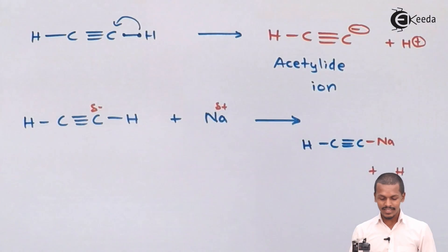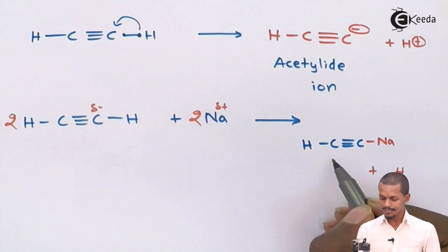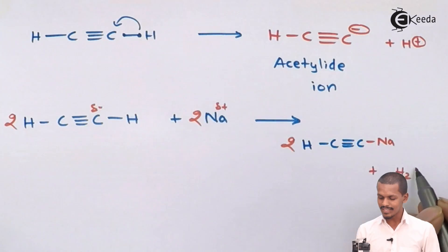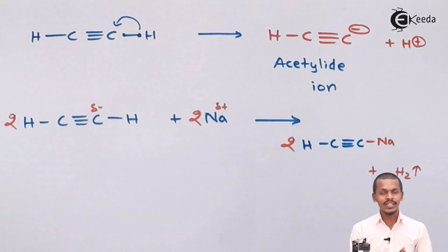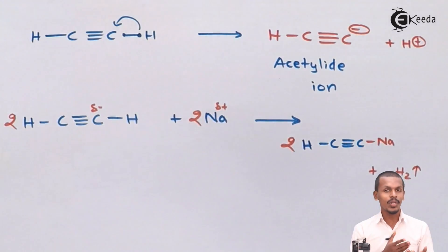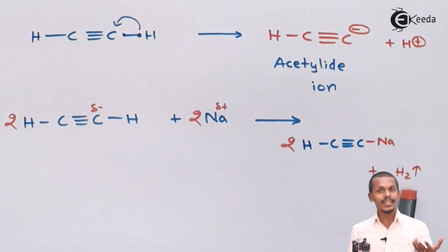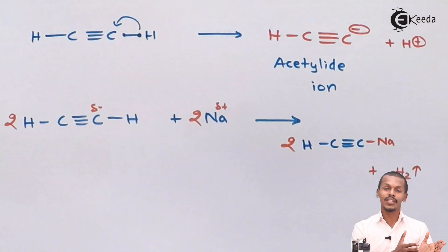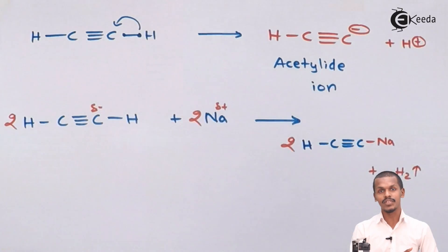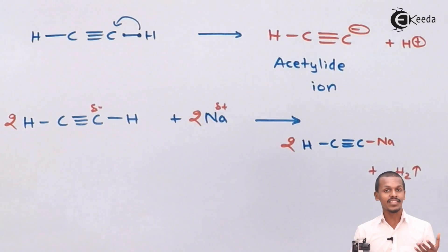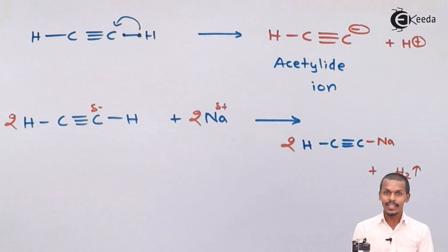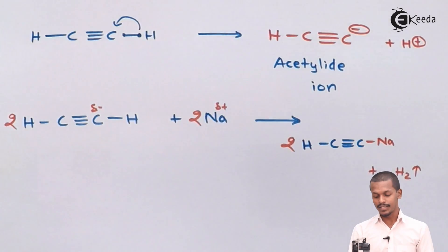To balance this, we multiply by 2, so hydrogen gas H2 is liberated. This is similar to the reaction when sodium is reacted with acetic acid, where sodium acetate is formed with liberation of H2. Just as acetic acid is acidic in nature, similarly acetylene or ethyne is the molecule that shows acidic nature.